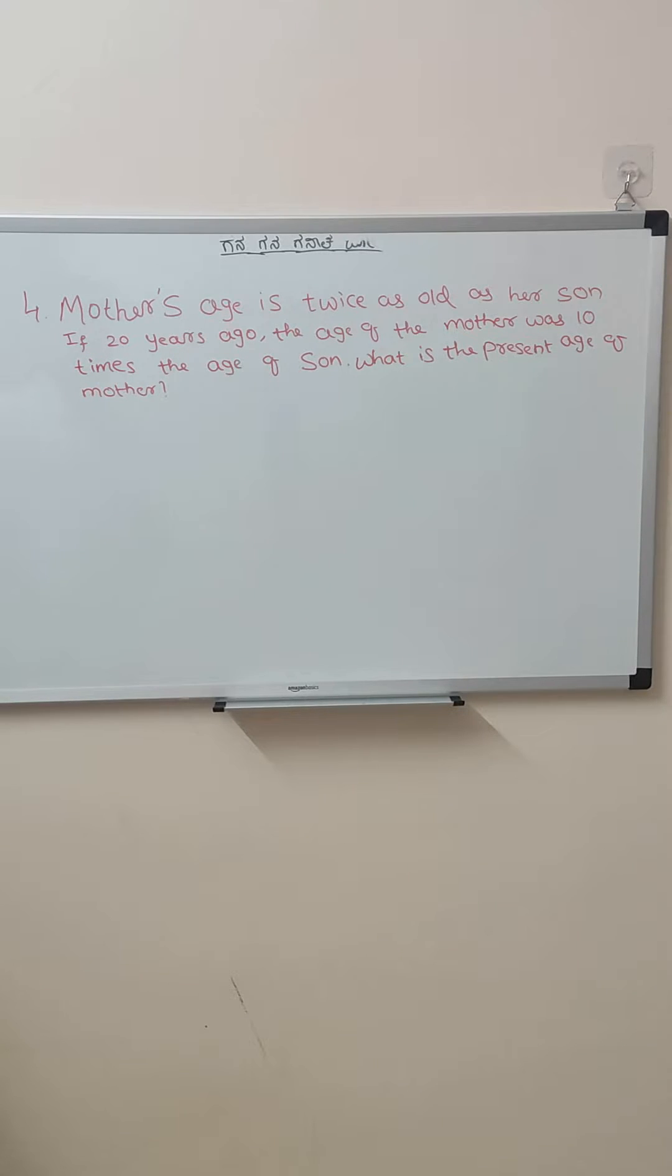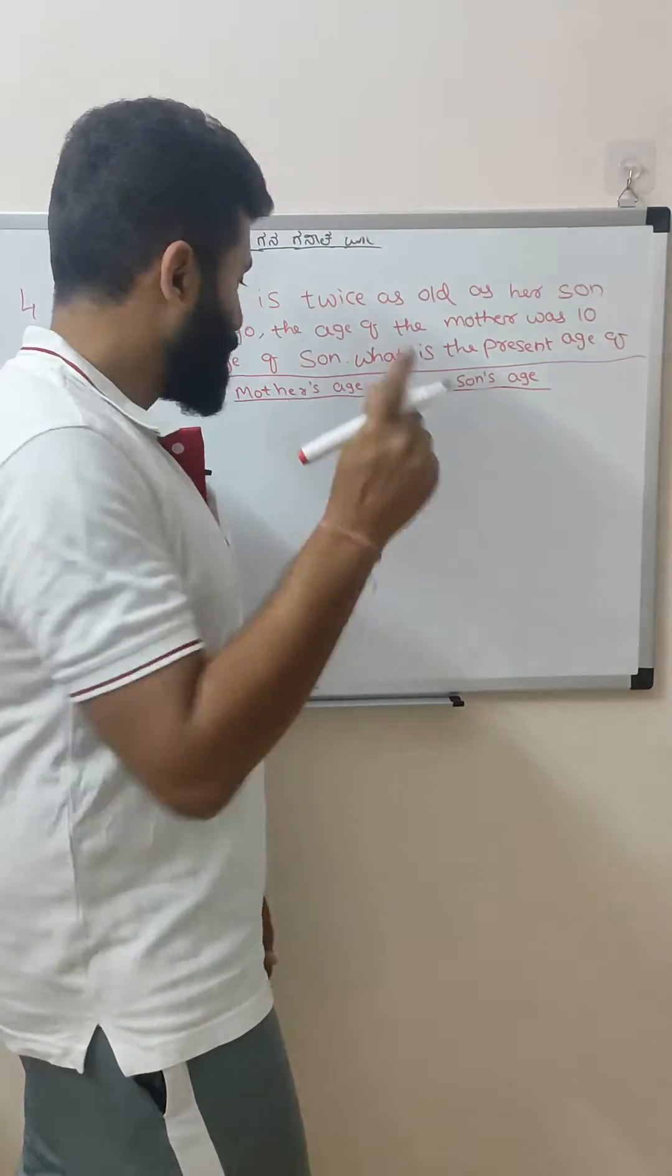Mother's age is twice as old as her son. If 20 years ago the age of the mother was 10 times the age of son, what is the present age of mother? Here there are two characters: one is mother and one is son.